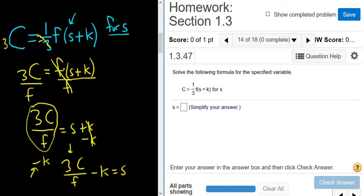To make it look better, you can rewrite it. You can put the s on the left-hand side. So little s is equal to 3C over F, and then minus, and the minus is on the outside, and then minus k. I hope that made sense.